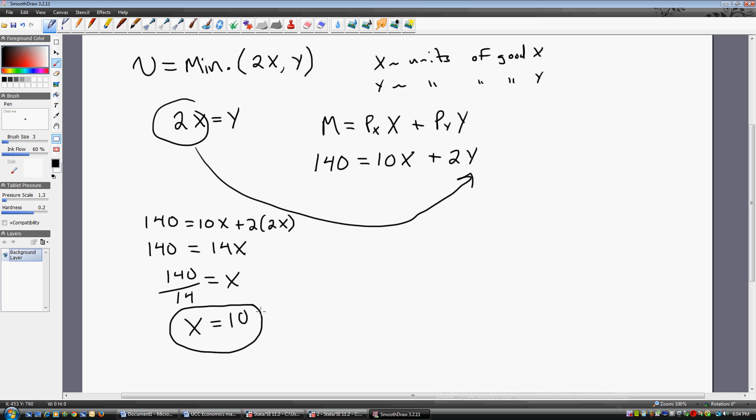As for Y, just take this result and plug it back into this Y equals 2X. So the consumer is going to consume 20 units of good Y. And those combinations of X and Y will maximize the consumer's utility.